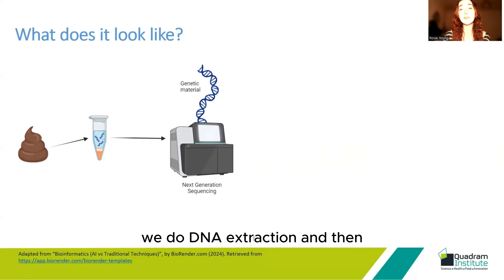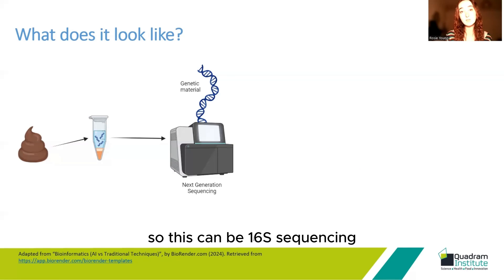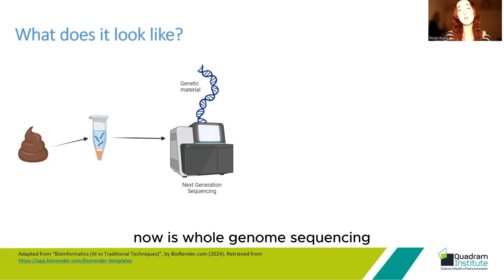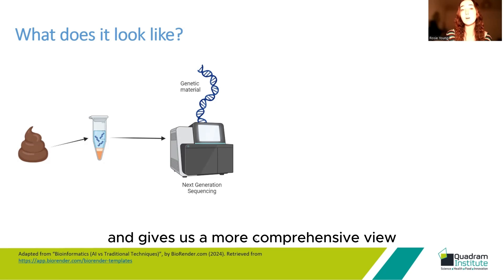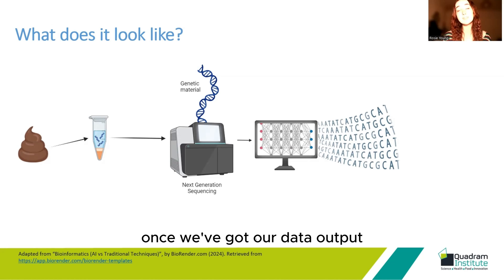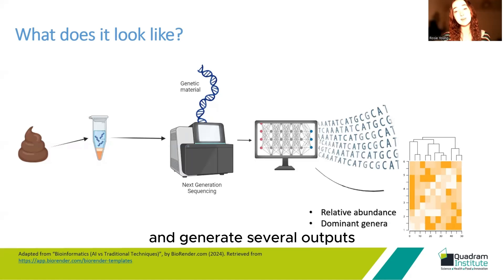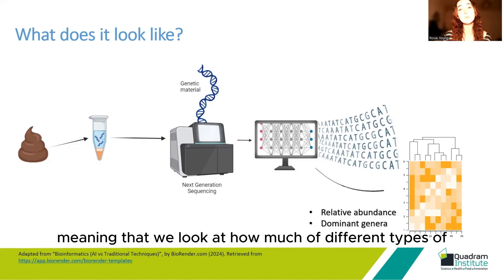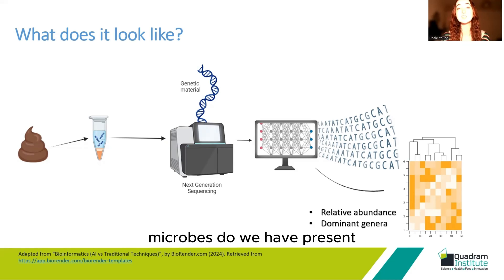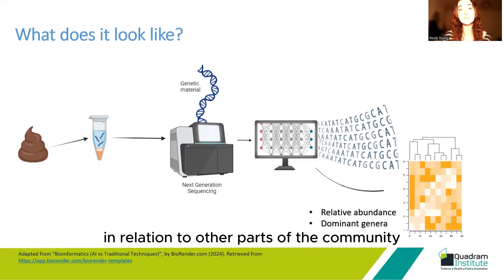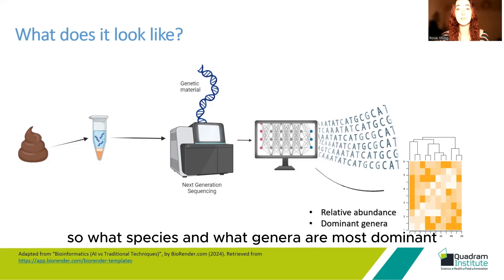We do DNA extraction and then submit for next generation sequencing. This can be 16S sequencing if you're just interested in bacteria, or — what is a lot more common now — whole genome sequencing, which takes all of the genetic material present and gives us a more comprehensive view of the types of viruses, fungi and bacteria present. Once we've got our data output, we can plug it into bioinformatic pipelines and generate several outputs. One of them is relative abundance — looking at how much of different types of microbes we have present in relation to other parts of the community, and what species and genera are most dominant.